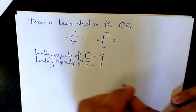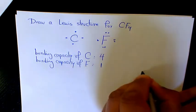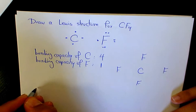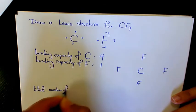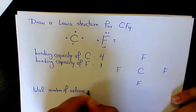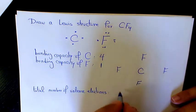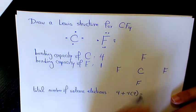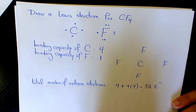We can write the symbol for the central atom and then arrange the symbols of the other atoms, so I'm going to write it as C with F, F, F, and F around it. Then we need to find out the total number of valence electrons. Carbon has one atom with four electrons, and we have four fluorine atoms each with seven, so it's going to be four plus 28, which equals 32 electrons total.